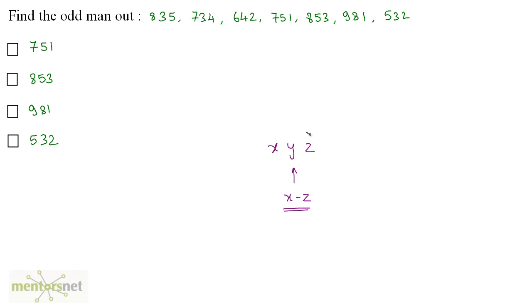Let's see which number does not follow this rule. So the first number, 8 minus 5, that's 3. So this follows the rule. The second one, 7 minus 4 is 3. So this is correct. 6 minus 2 is 4. So this one's also correct. 7 minus 1 is not 5.